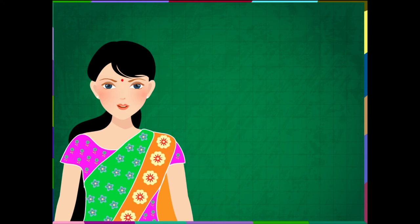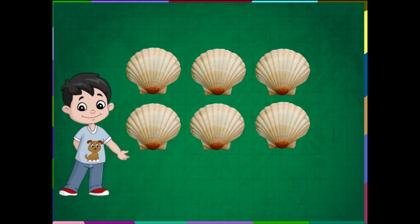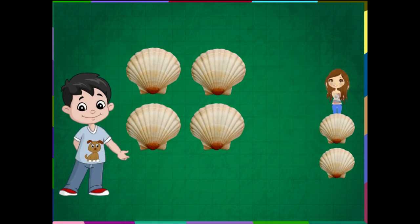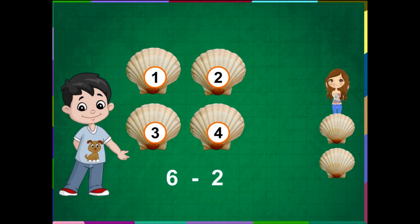Ram has 6 shells. His friend borrows 2 shells from Ram. How many shells is left with Ram now? Ram now has 6 minus 2. So, how many are left? 1, 2, 3 and 4. 6 minus 2 is equal to 4. This is the minus symbol. This means equal to sign. And 4 is the difference.